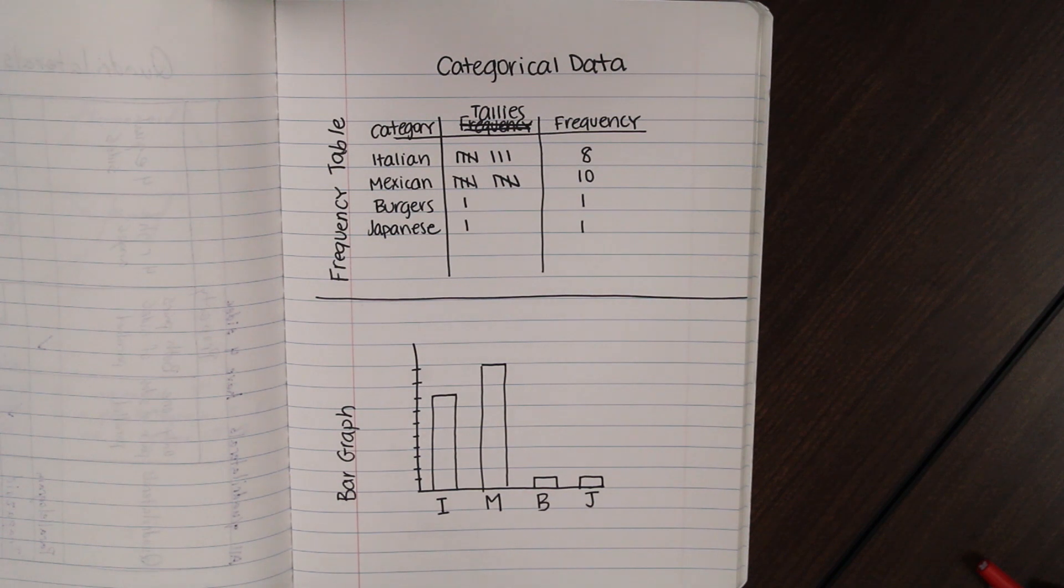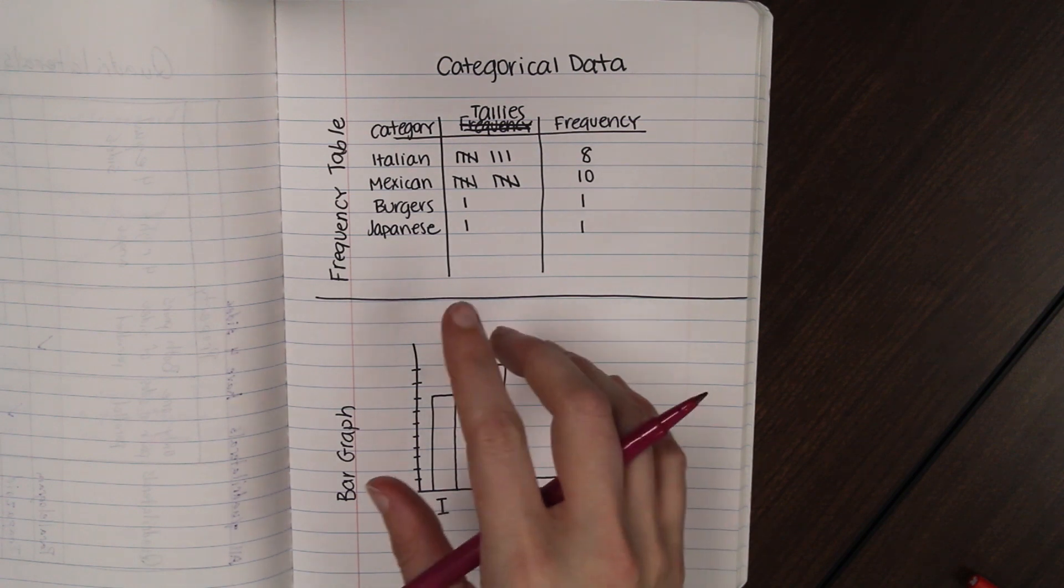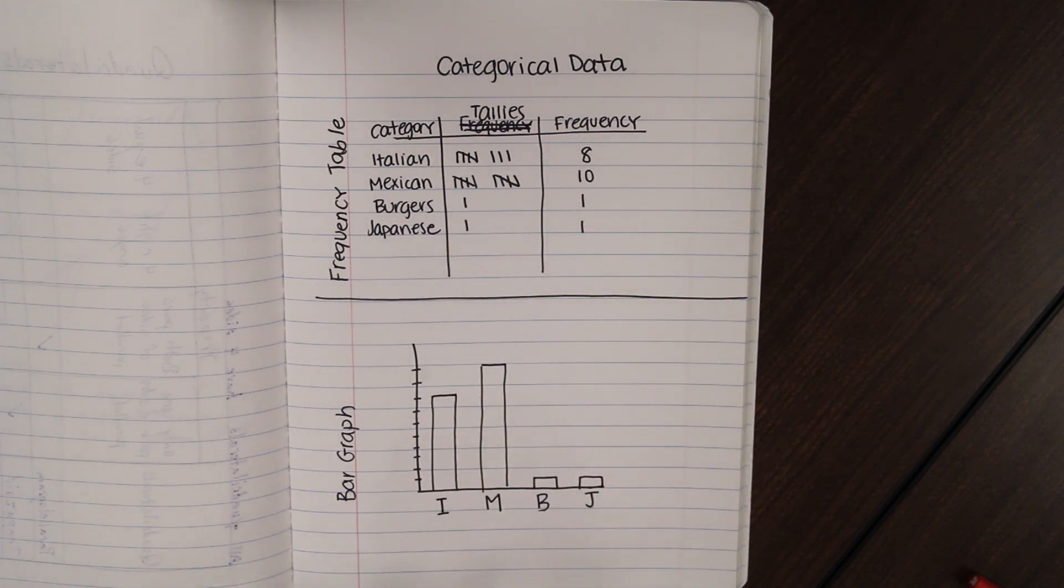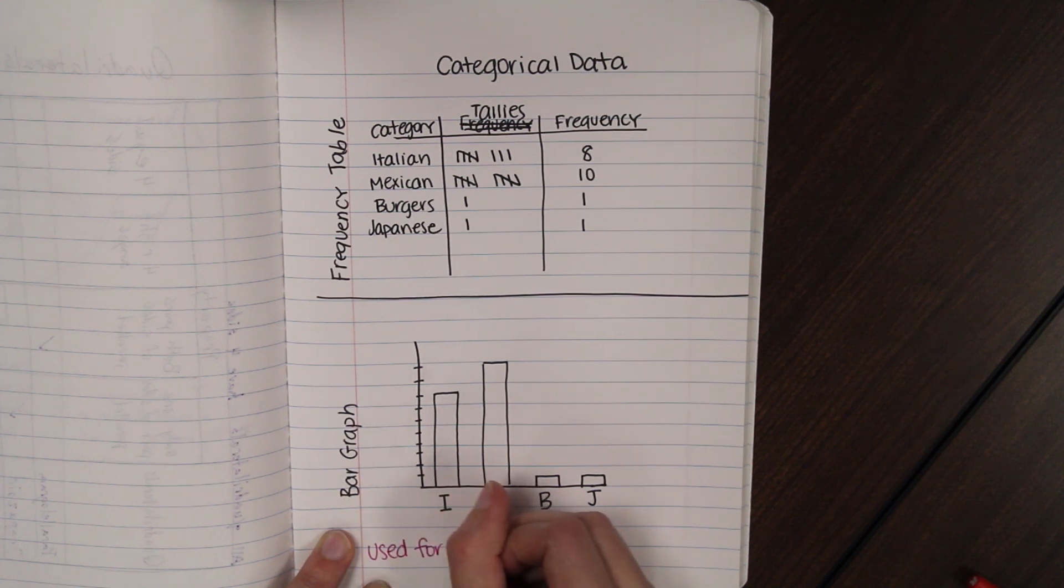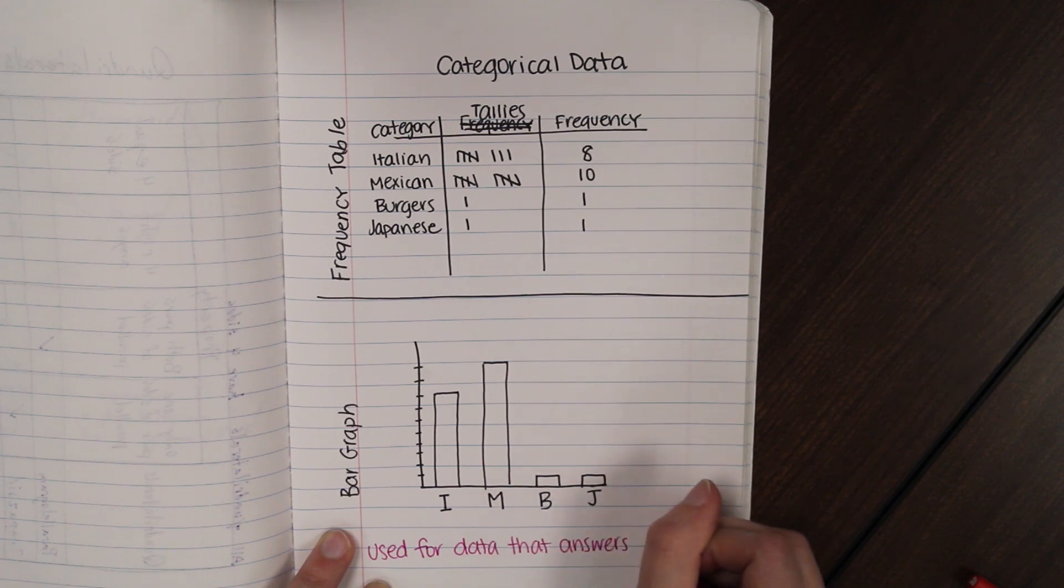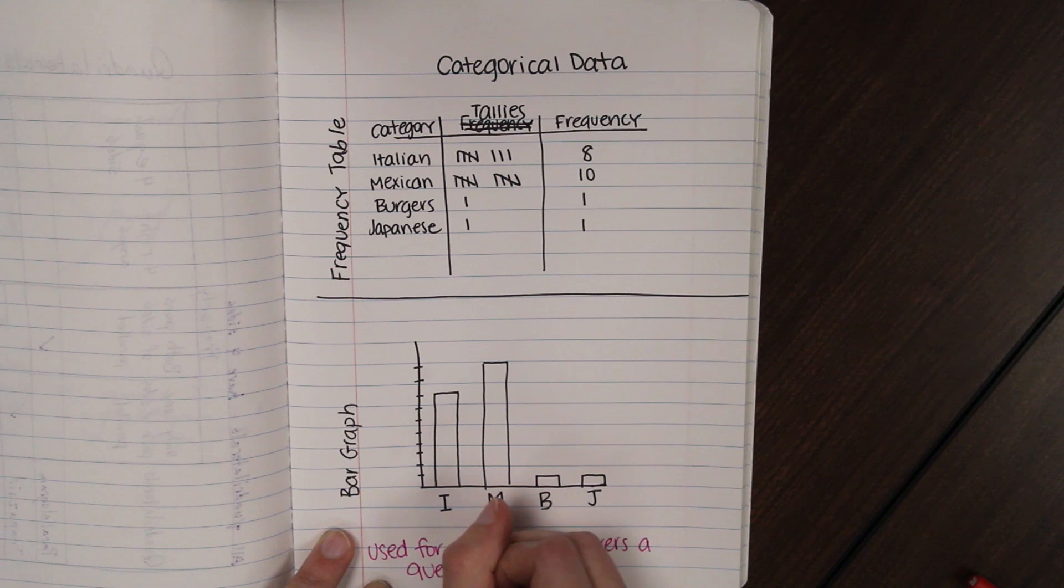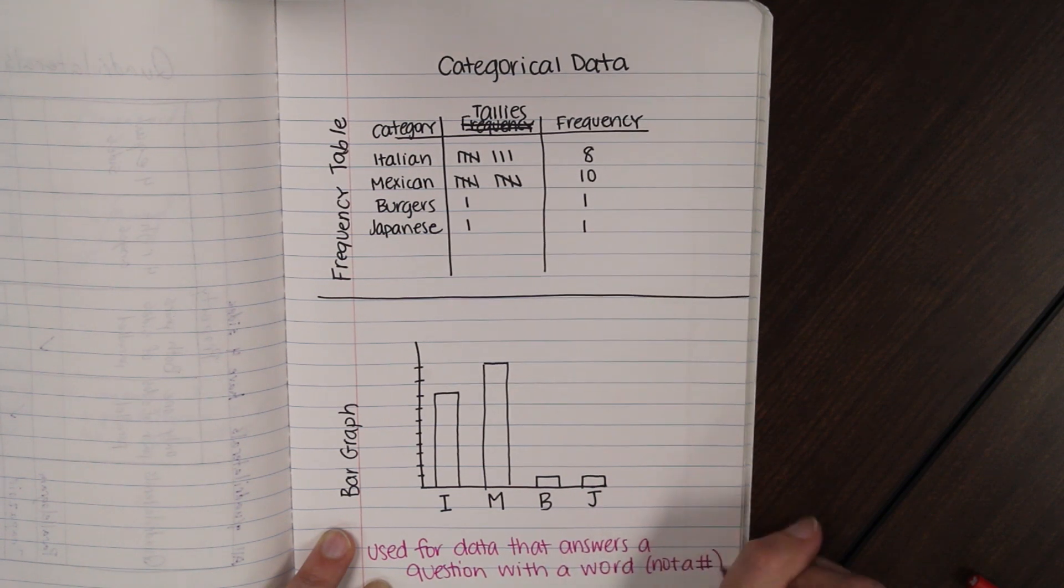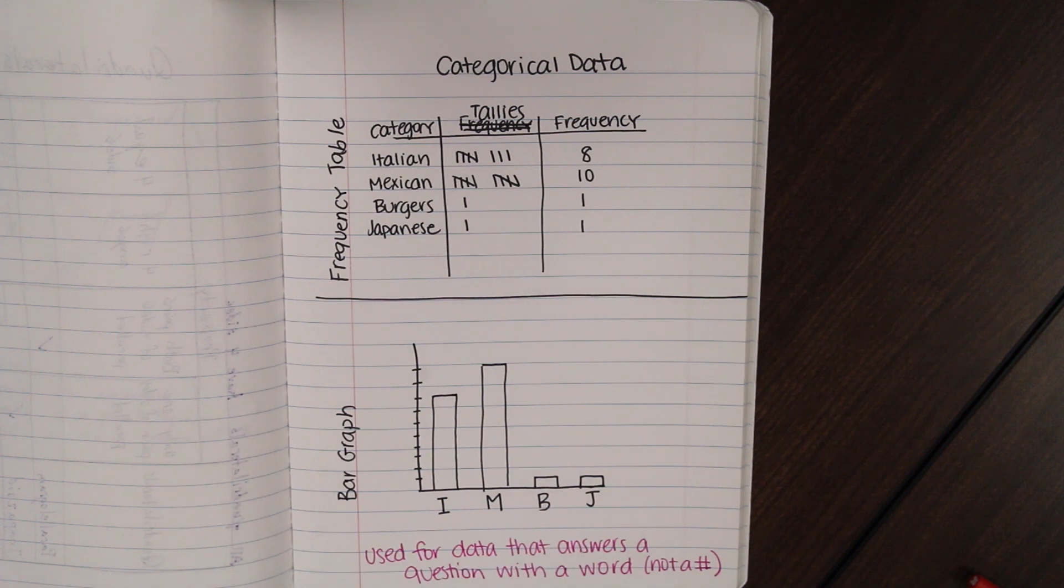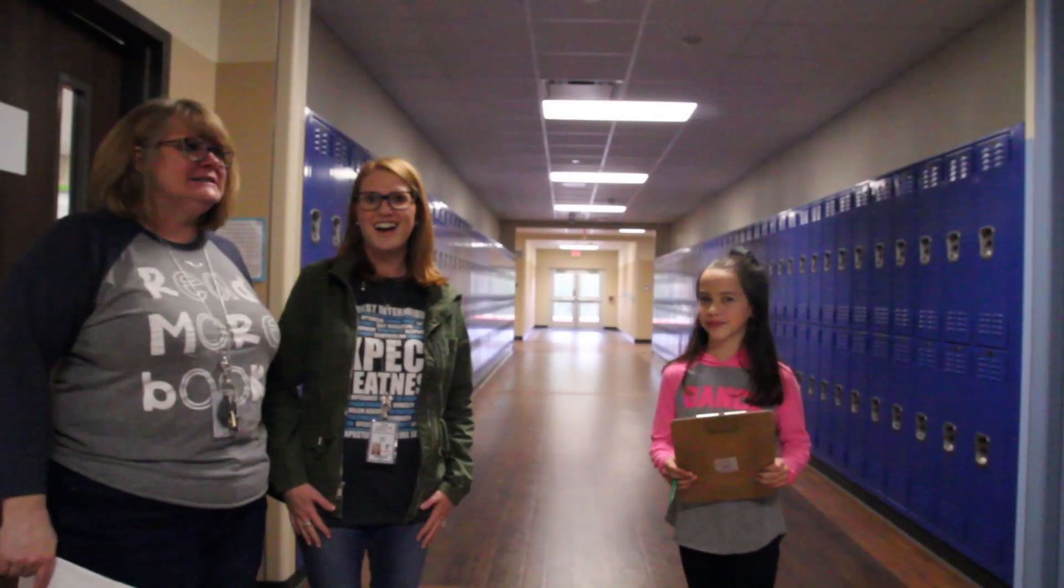So last thing to note on categorical data. This is, these two graphs you're going to use when like the answer to your poll question would be a word or a category. Like what's your favorite color? What's your favorite type of food? And you're answering with a word, not a number. So this is used for data that answers a question with a word, not with a number. All right. Okay. Favorite food is pizza. Josh Kelly. Amen.